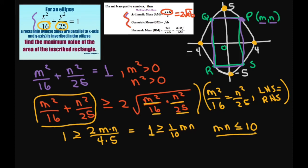So now let's do the area. The area of our rectangle PQRS is going to be, this is your m is your x, so it's going to be 2m.